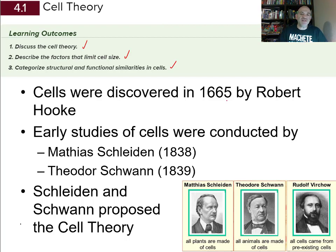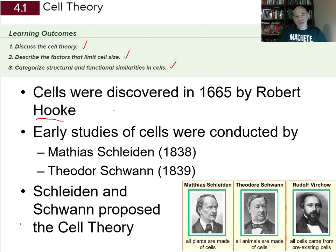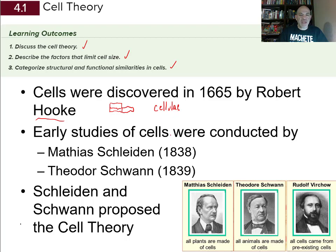Cells were first discovered in 1665 by a scientist named Robert Hooke. He was looking at little thin sections of cork using microscopes he worked with at the time — and even helped to improve. When he looked at a thin slice of cork, he found these structures that were somewhat rectangular shaped, and they reminded him of the rooms that monks would stay in in a monastery, where they would sleep. Those were called cellulae, and this is where the name cells came from.